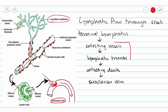Almost all of our lymphatic vessels are going to contain valves — basically all except our terminal lymphatics. These valves help us with one-way flow of lymph. If our lymph attempts to go in the wrong direction those valves are going to close and do not allow the lymph to move backwards. Instead we only have one-way flow of lymph toward our subclavian veins.